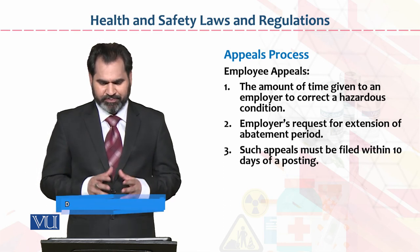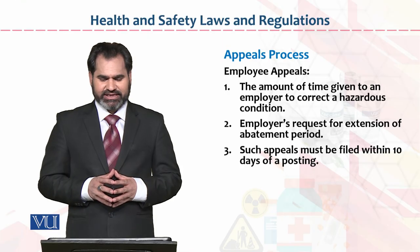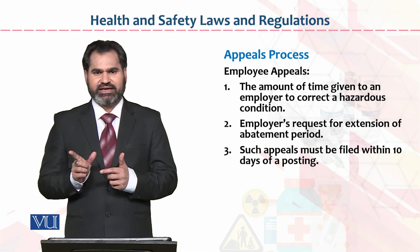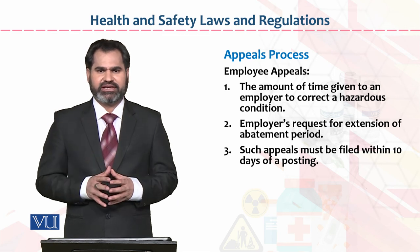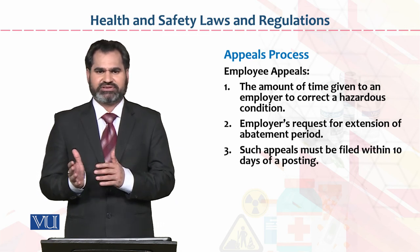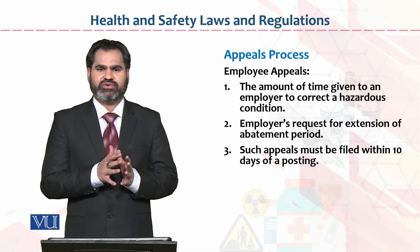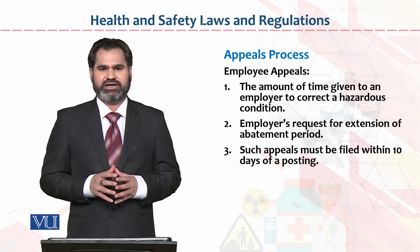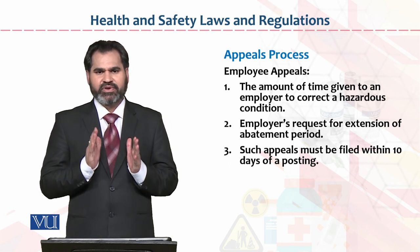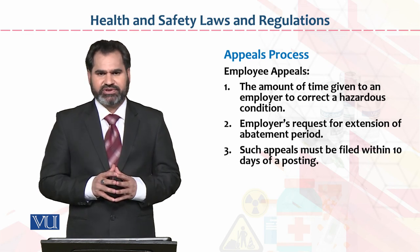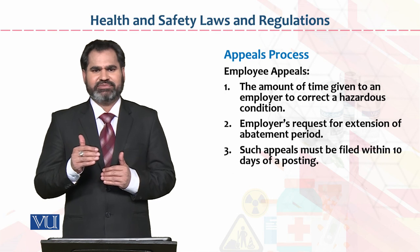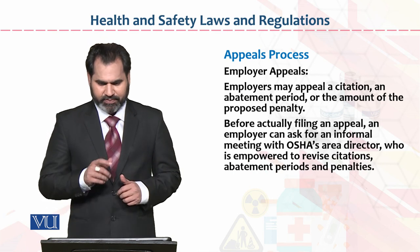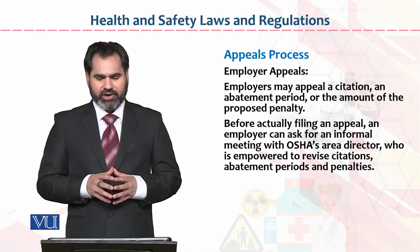Such appeals must be filed within 10 days of a posting. When the organization is informed of the decision, the appeal process starts within those 10 days. For example, if today is the 3rd of July and an organization's inspection happened today, then within 10 days — by the 13th of July — you can file the appeal.